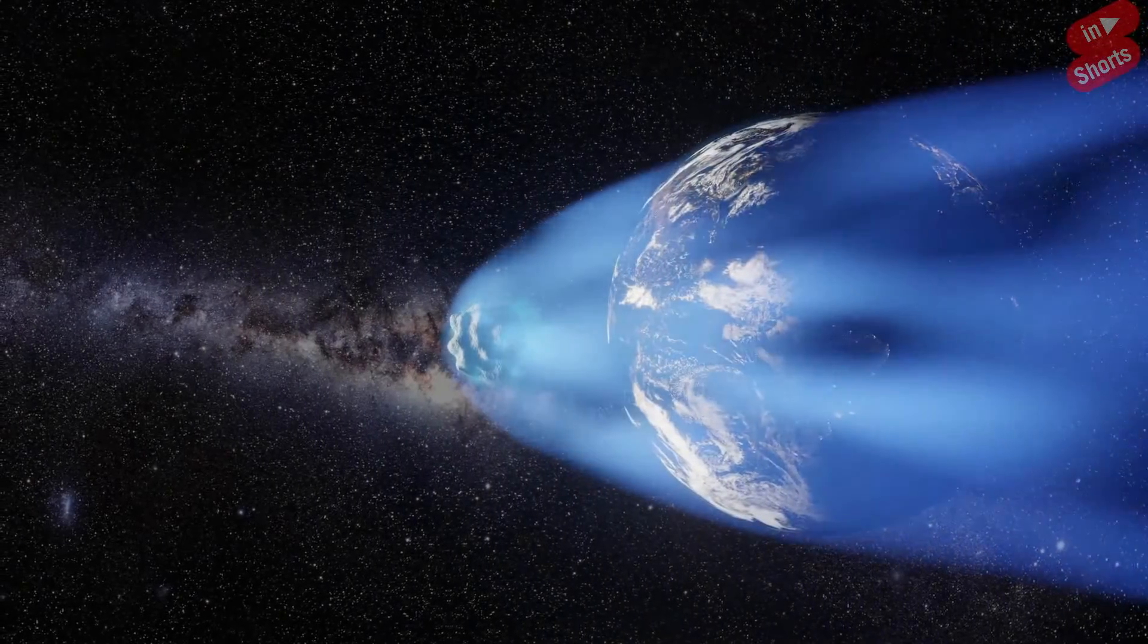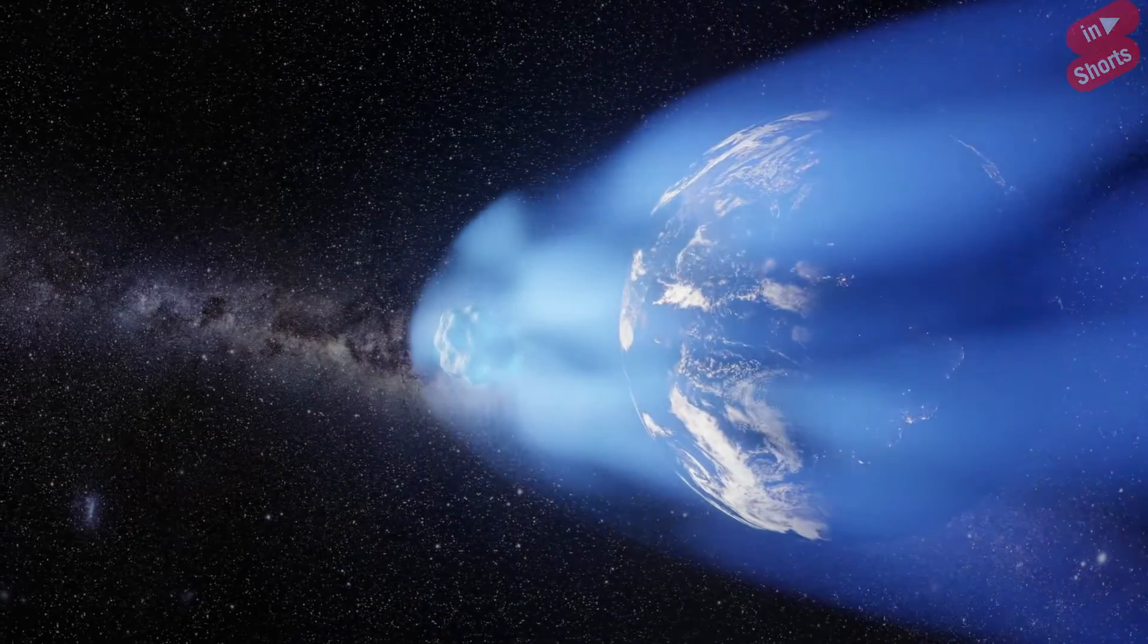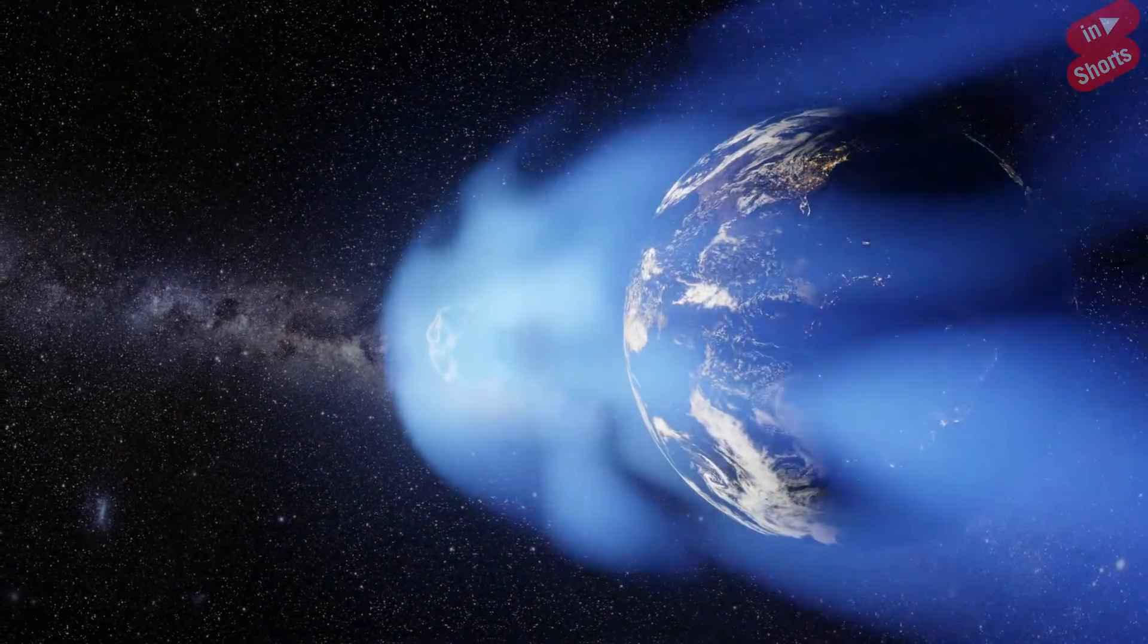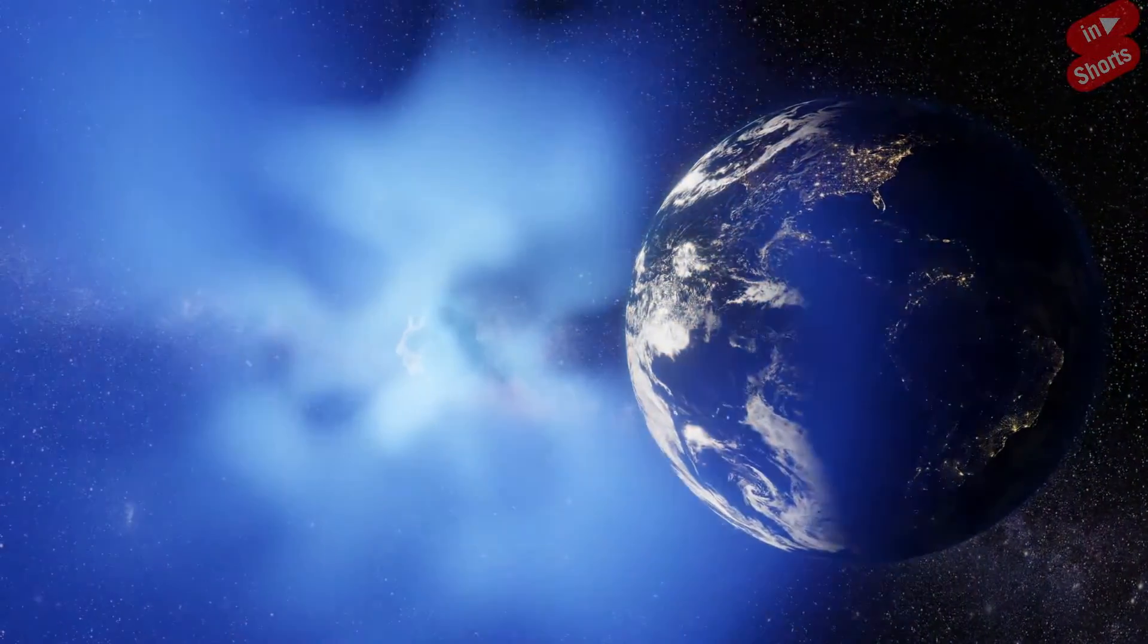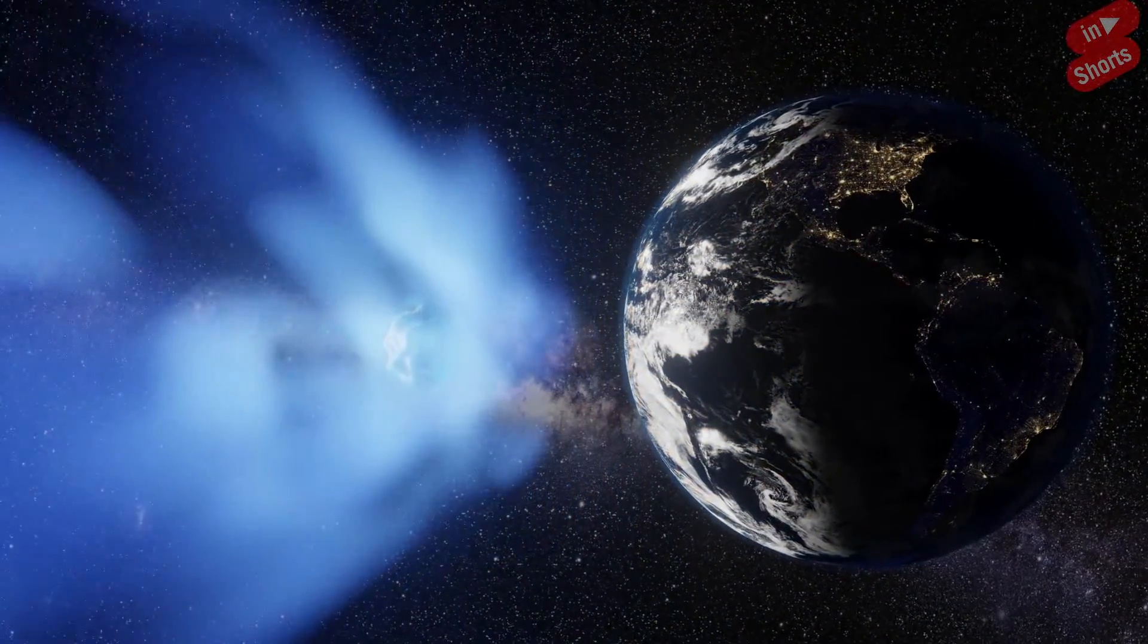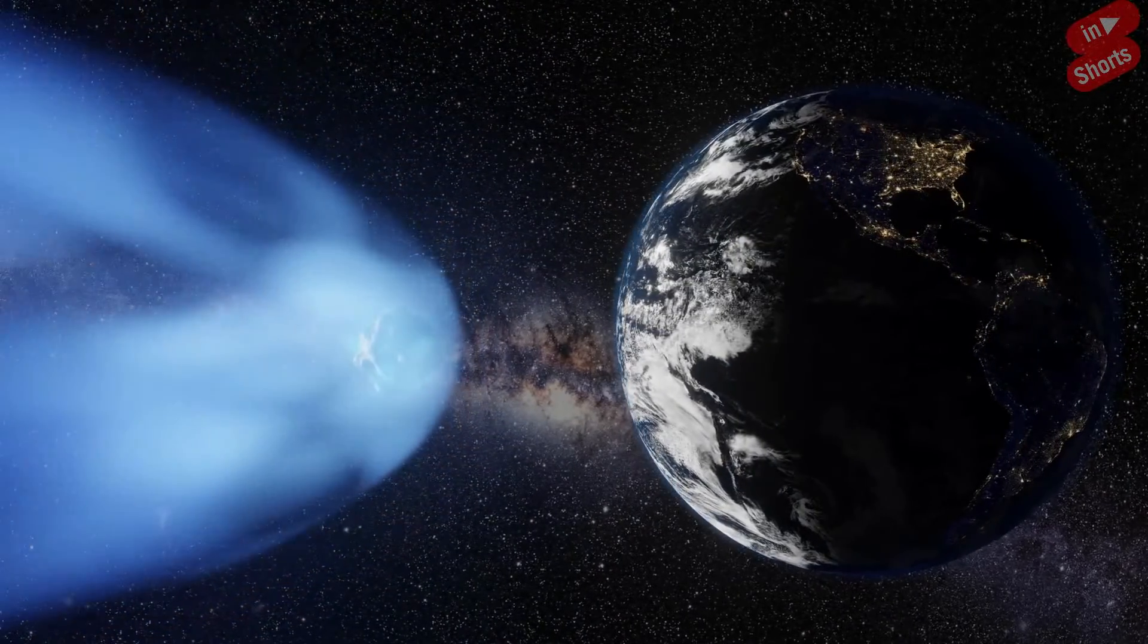If you're worried about a rogue asteroid or comet obliterating life as we know it this week, don't panic just yet. Just because the asteroids in the new NASA map are classified as potentially hazardous, scientists call them PHAs in NASA-speak. That doesn't mean they are an imminent threat to the Earth, NASA said.